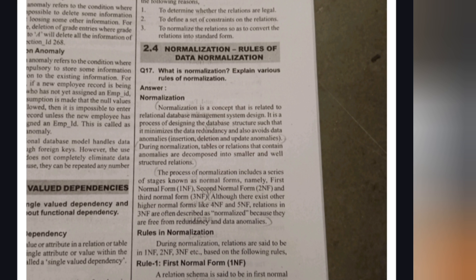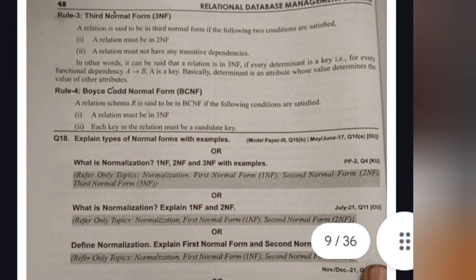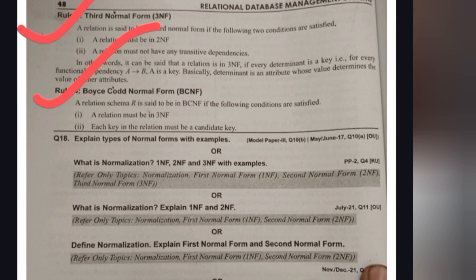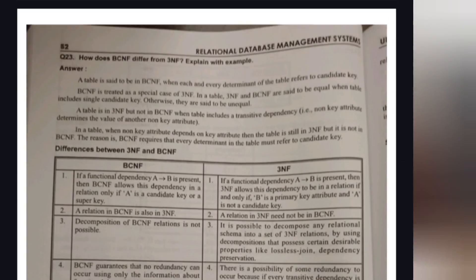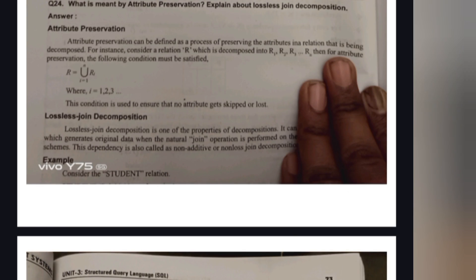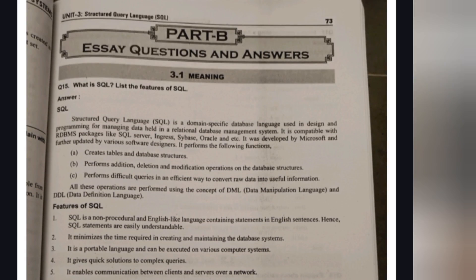Now for Unit 2: Normalization. I have already uploaded a detailed video on normalization in our channel — please watch that video. Normalization means storing data using a standardized format. The normal forms are 1NF, 2NF, 3NF, and BCNF. Watching that video will help you easily get 10 marks on this topic.